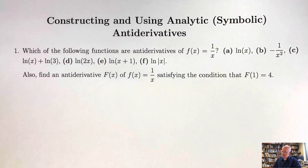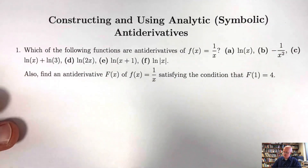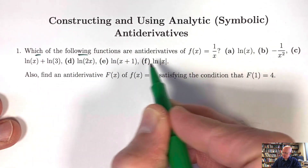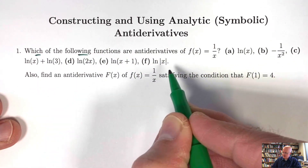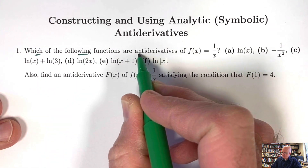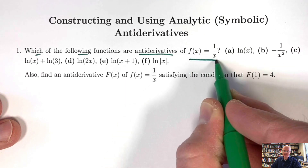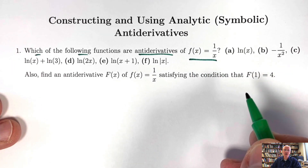Let's learn about constructing and using analytic, in other words symbolic, antiderivatives. Number one says: which of the following functions, choices A through F, are antiderivatives of the function f(x) = 1/x?